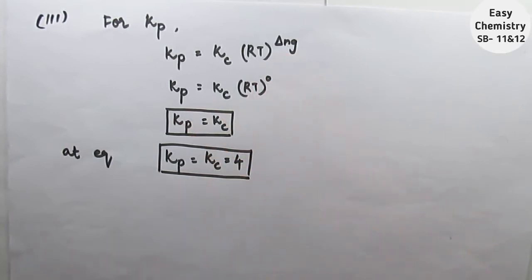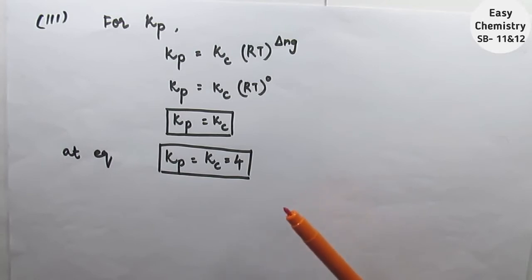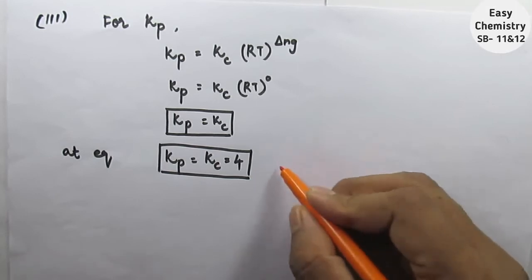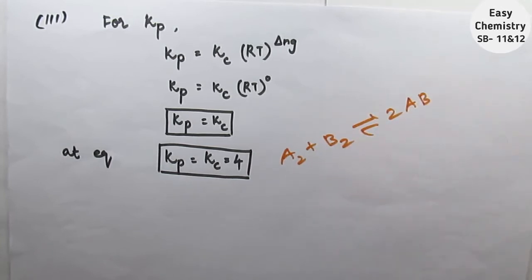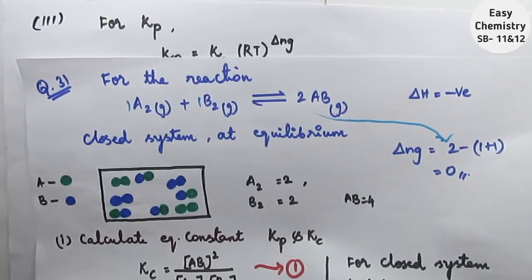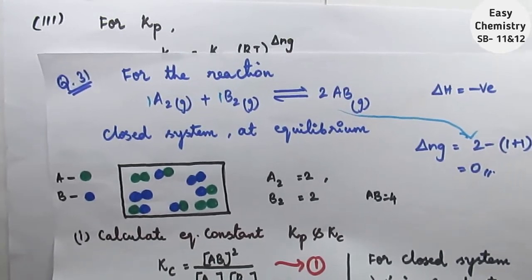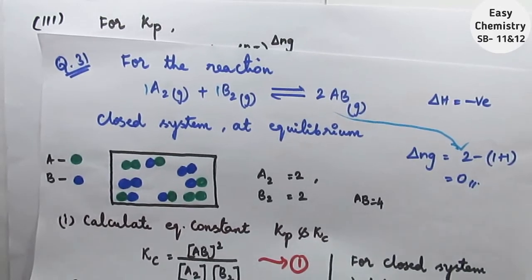The delta nG value is 0 because the number of moles of products equals the number of moles of reactants — they are the same. So the effect of increasing or decreasing pressure has no effect on the equilibrium. Question 3 asks: what is the effect of increase in pressure for the mixture at equilibrium in A₂ + B₂ ⇌ 2AB? Since delta nG equals 0, pressure has no effect. That is all.